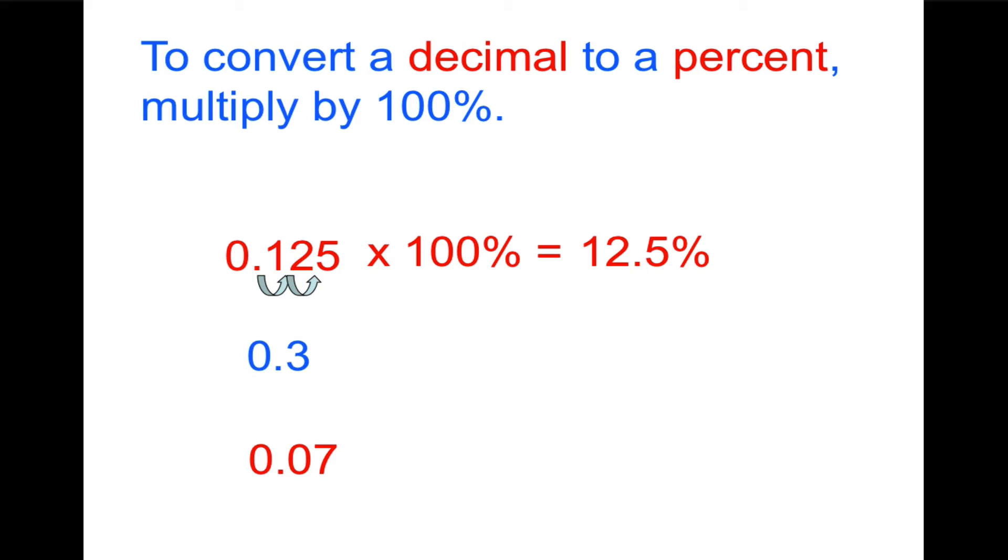Our next example is 0.3. Let's multiply by 100%. That will move the decimal once, twice to the right. So it becomes, well, I like to put an egg in a carton, and that will be 30.0 or just 30%. Finally, we have 0.7 times 100%. Move that decimal once, twice to the right. It would be 7.0 or just 7%.